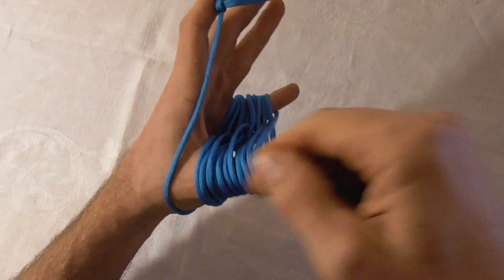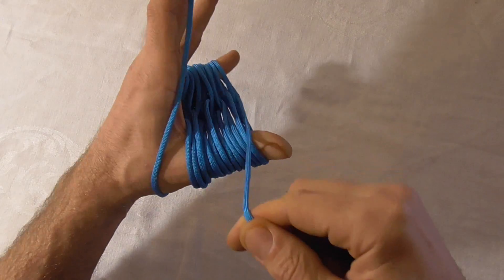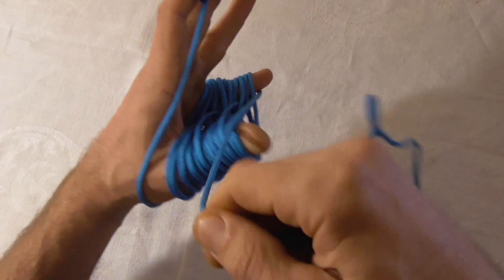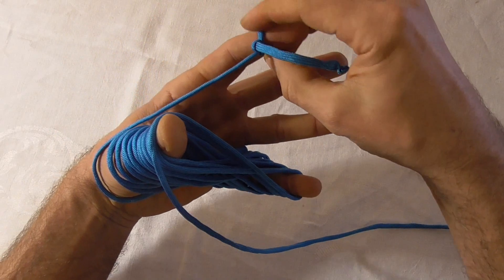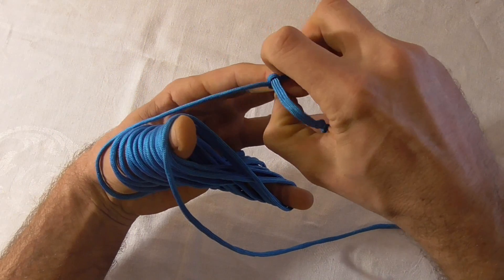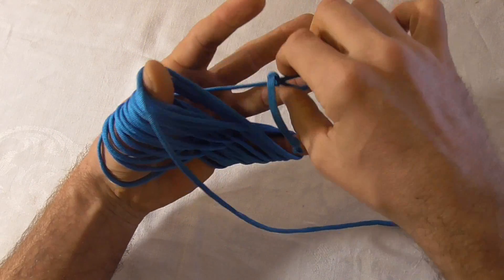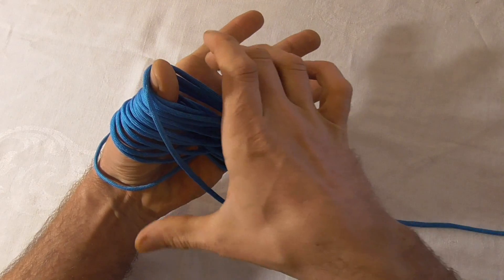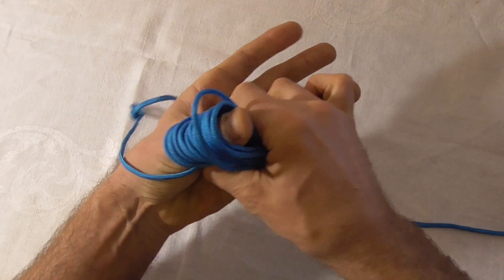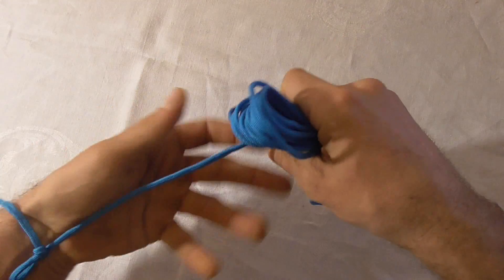And just keep going until you either run out of your fingers or you get to the end of your cord. I've gotten to the end of my cord now, so I'm just going to take this loop off of my index finger. Then I'm going to carefully take this whole bundle off of my thumb and my little finger.